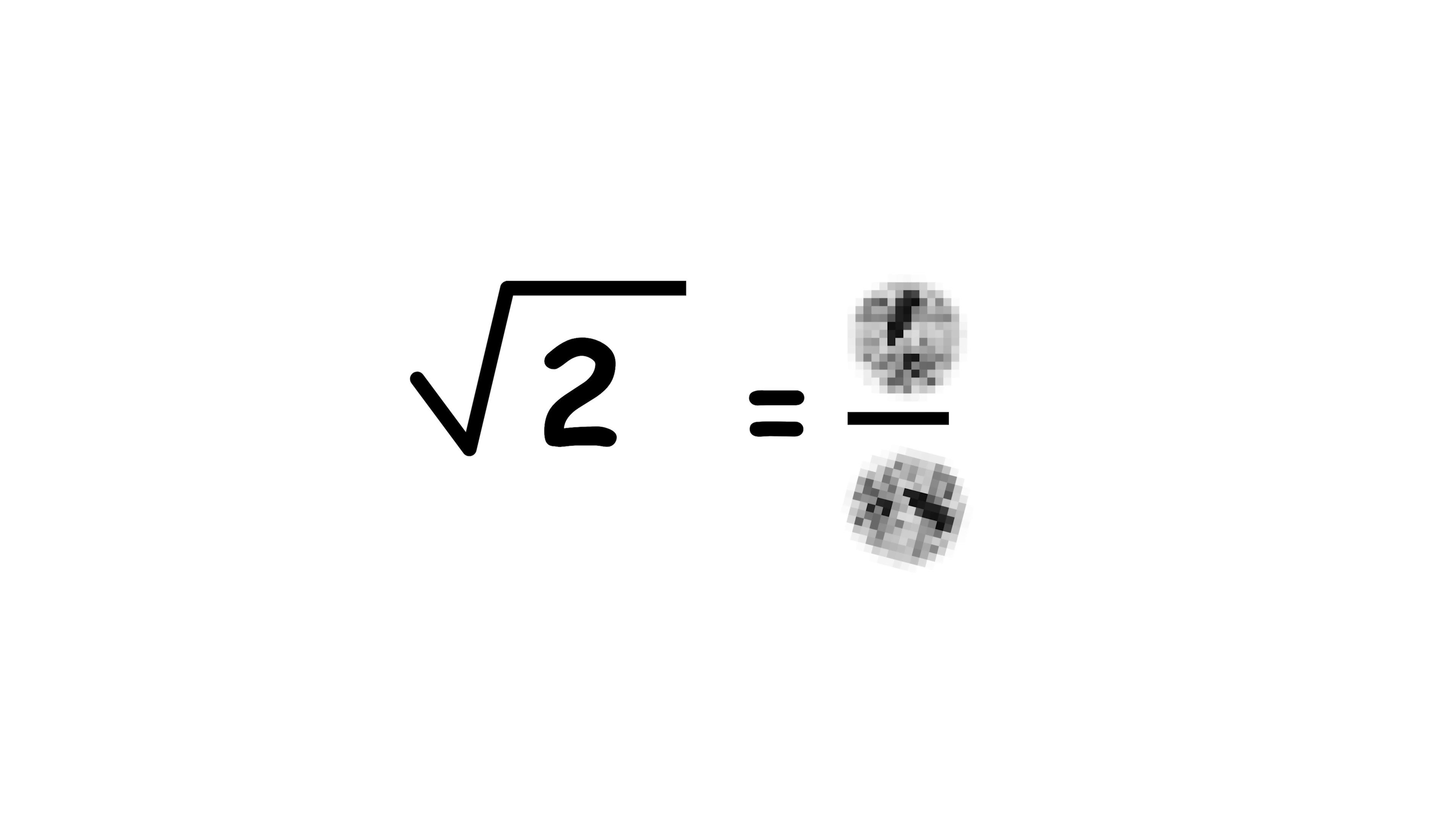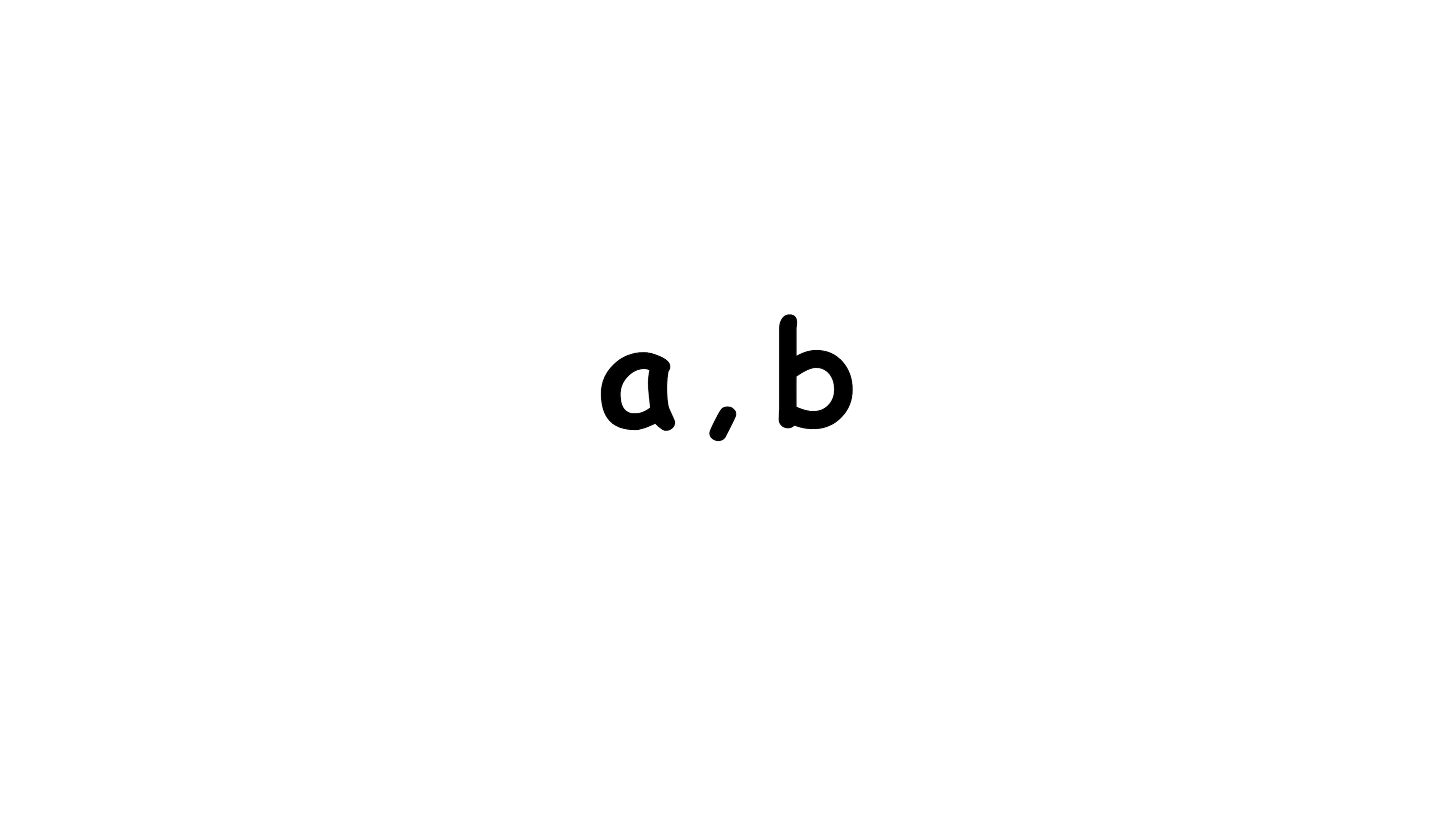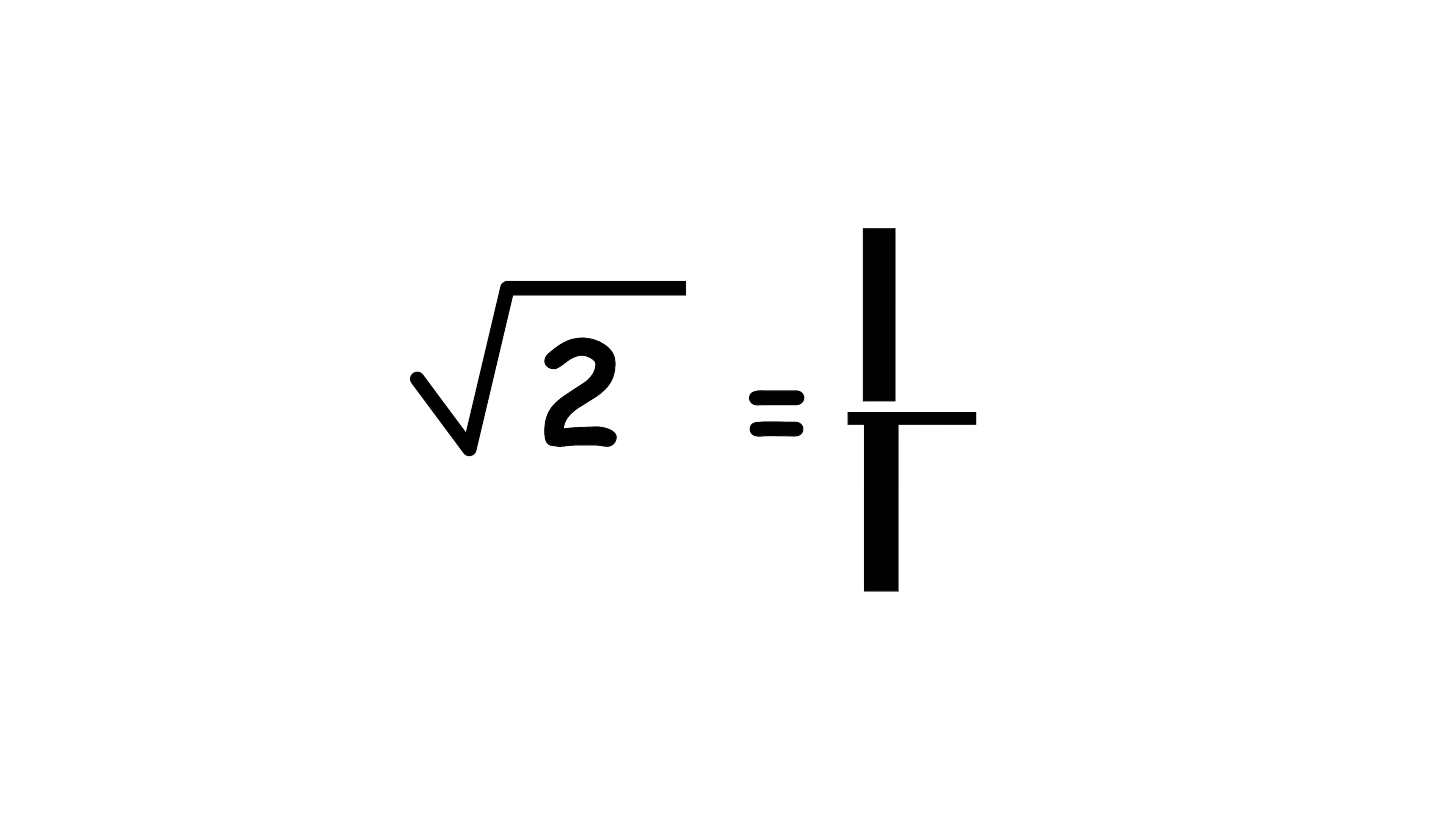Let's assume square root of 2 can be represented as a simple fraction of whole numbers, a over b, where a and b have no common factors other than 1. In mathematical terms, they are co-prime. From this, we can write the equality square root of 2 equals a over b.